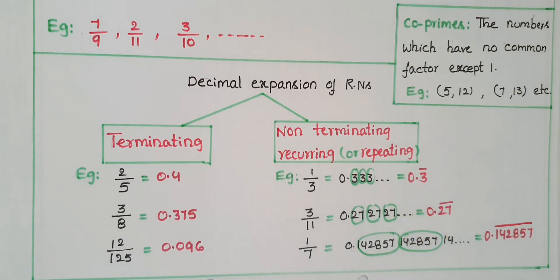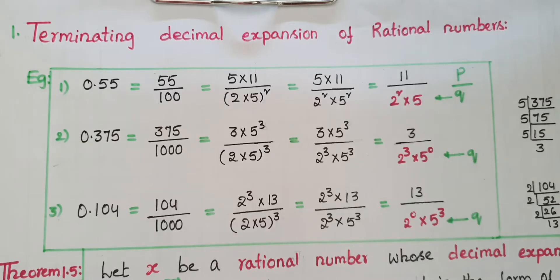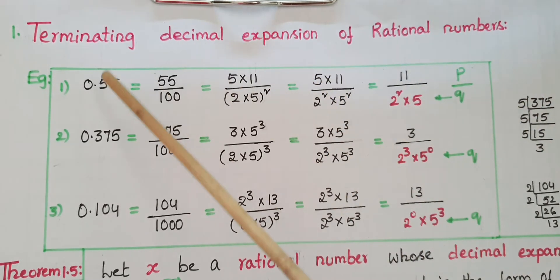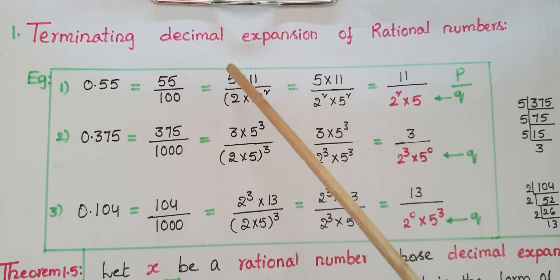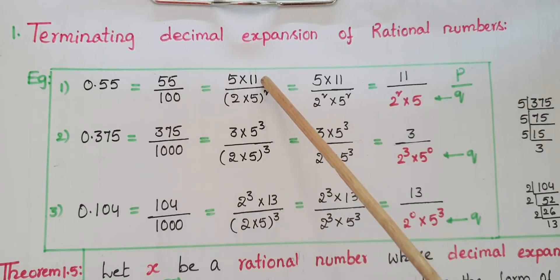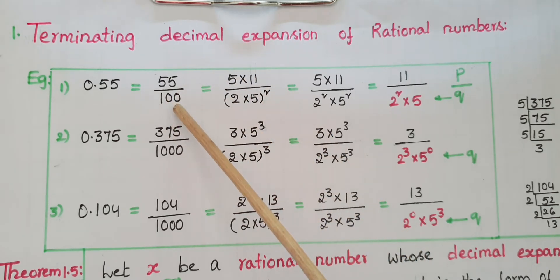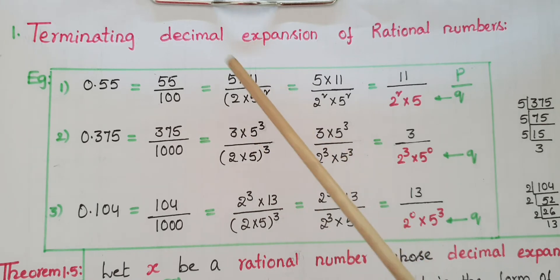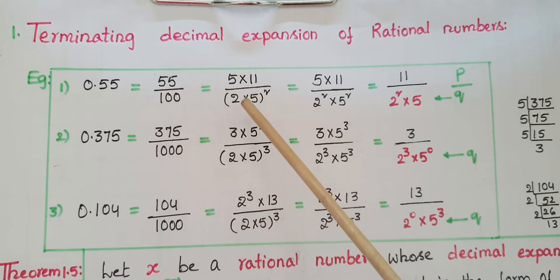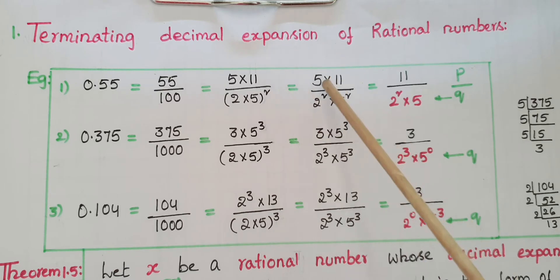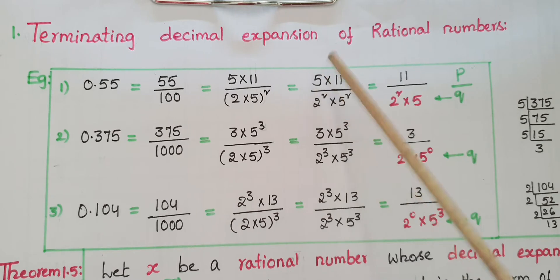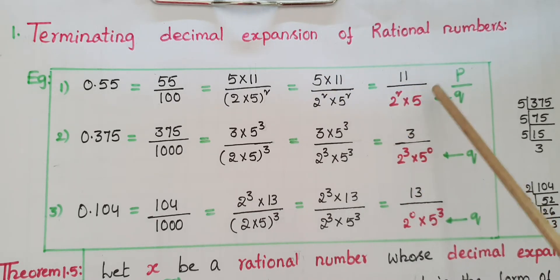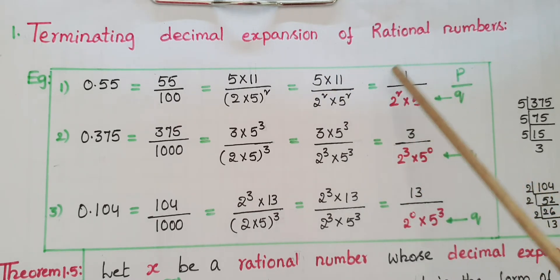First we will learn about terminating decimal expansion of rational numbers. For example, take 0.55 — we can write this as 55 by 100. Prime factorize: 55 is 5 into 11, and 100 is 10 squared, so 10 is 2 into 5, meaning 2 into 5 whole squared. That gives us 5 into 11 by 2 squared into 5 squared. Cancel the 5s: we get 11 by 2 squared into 5. This is in the form p by q where q is 2 squared into 5.